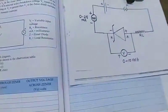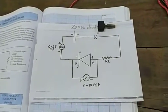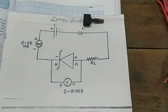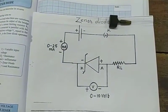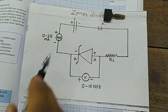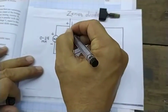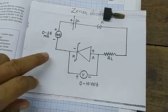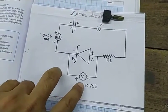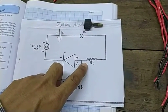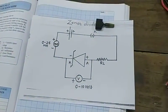Let us first have a look at the circuit. If you observe in the textbook, a very similar kind of circuit is shown here, which makes it easy to make connections. We have a variable voltage source, whose positive is connected to the milliammeter. The milliammeter is connected to the negative of the Zener Diode. Across the Zener Diode, we have a 0 to 10 volt voltmeter. There is a load resistance connected in the circuit.